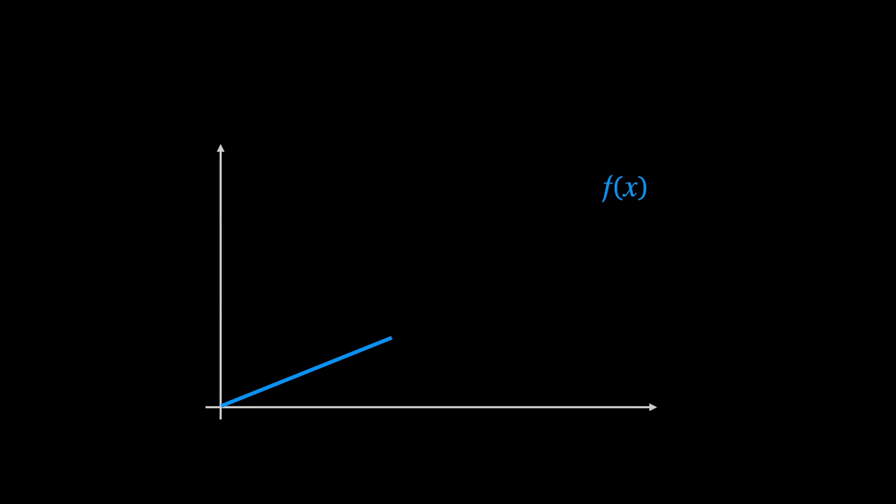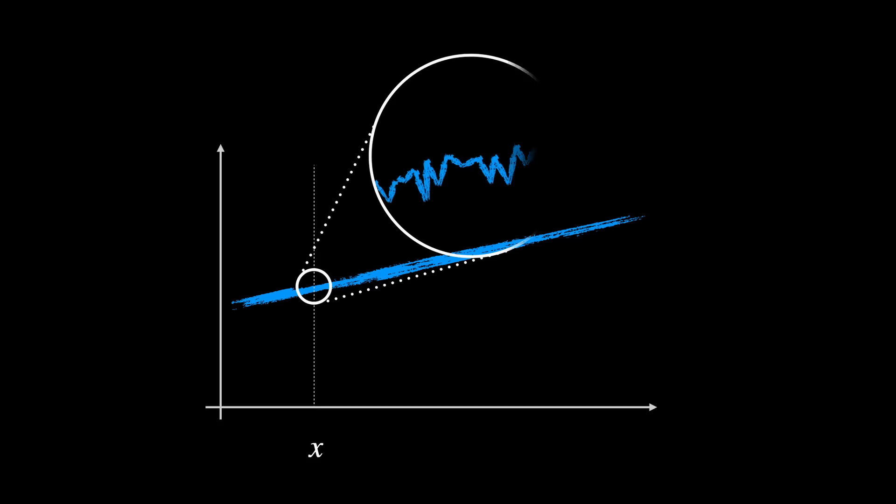For a function to be nowhere continuous you have to be able to choose any x value and the limit as f approaches that value has to fail from both sides. That means it has to jump up and down in some non-smooth way however close you get to x.